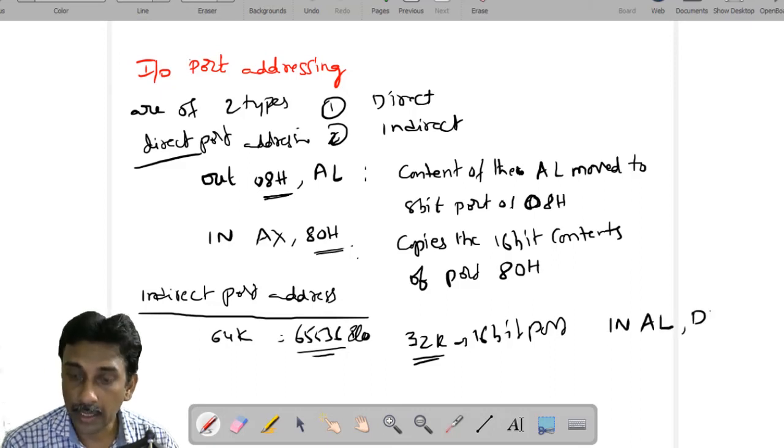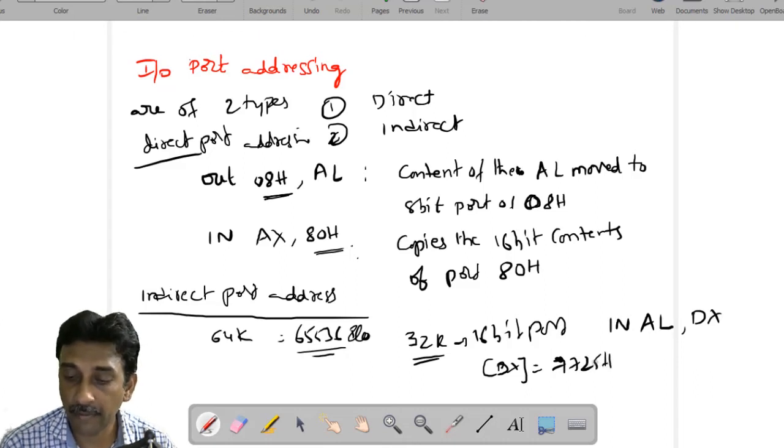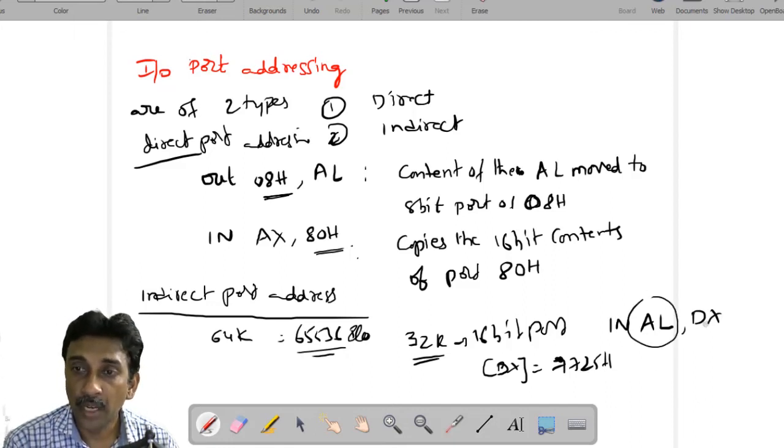Let us take an example. IN AL, DX register. That means the DX register has the port value, like some 7725H. For our convenience, I am saying 7725H - it is not fixed value. Whatever the data is there, that data will be copied in the 8-bit register of AL register. So that is IN.